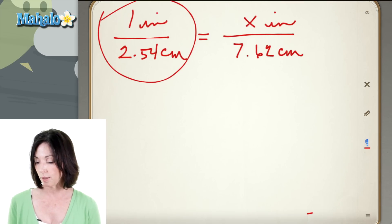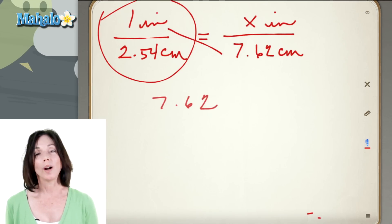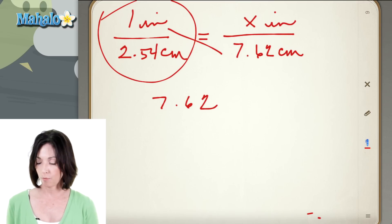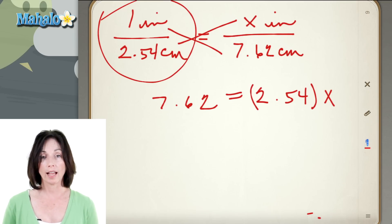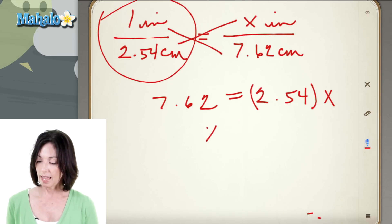Again we're just going to cross multiply. We're going to cross multiply this way. 1 times 7.62 is 7.62 and then we're going to cross multiply this way and we have 2.54 times x. So now to solve for x I just divide both sides of the equation by 2.54 and 7.62 divided by 2.54 happens to be 3. So 3 inches.